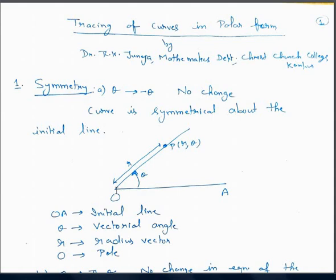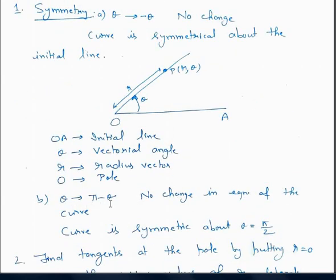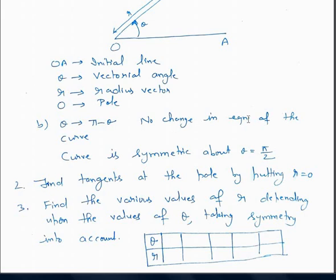There are several steps for tracing a curve in polar form. The first step is to find symmetry. If in the equation of the curve we replace theta by minus theta and there is no change in the equation, then the curve is symmetrical about the initial line — meaning the figure above OA is the same as below OA. If we replace theta by pi minus theta and there is no change, then the curve is symmetrical about the line theta equals pi by 2.